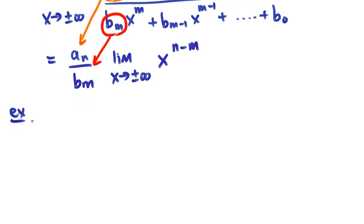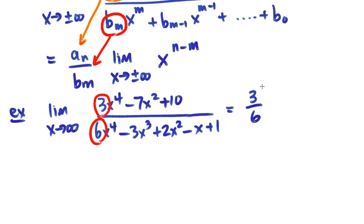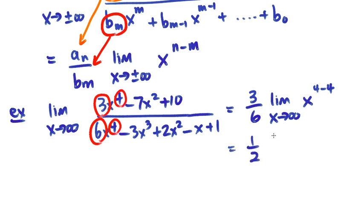For example: the limit as x goes to infinity of (3x⁴ − 7x² + 10) over (6x⁴ − 3x³ + 2x² − x + 1). Take the leading coefficients — 3 over 6, which reduces to 1/2 — and apply the limit as x goes to infinity of x to the power of (4 − 4) = x⁰ = 1. So the limit equals 1/2 times 1, which is 1/2.